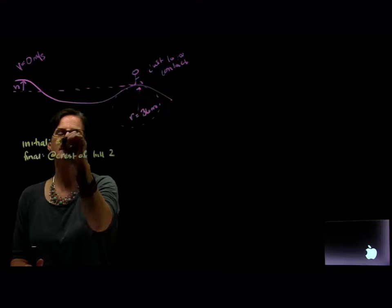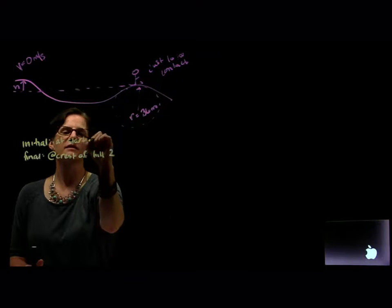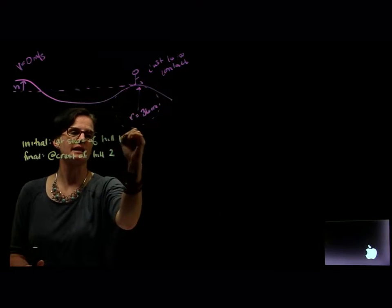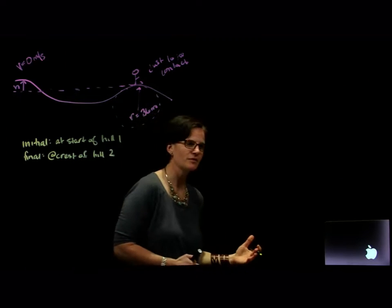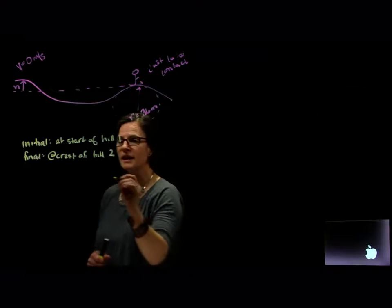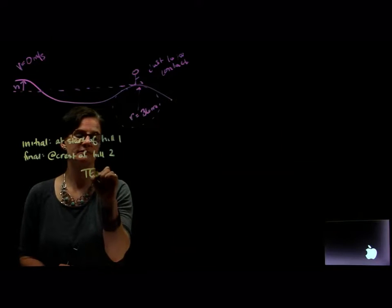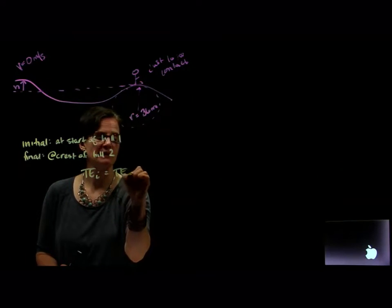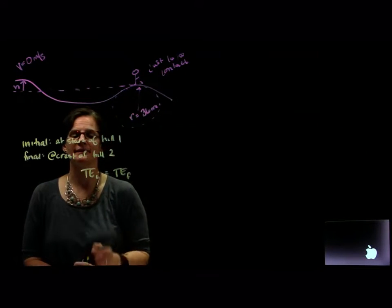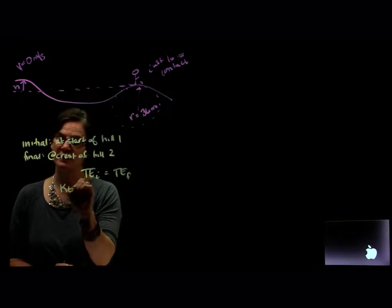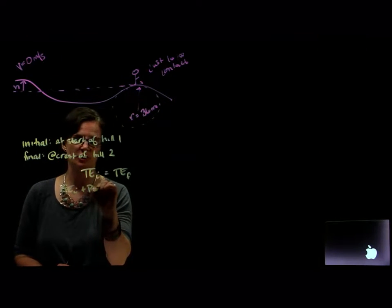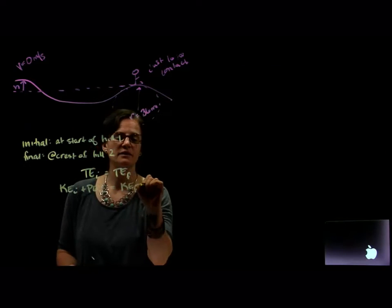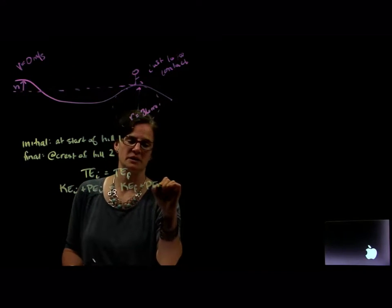We're interested in him starting at the top of hill one. So our total energy initial has to equal our total final energy. Our initial energy is going to be our initial kinetic plus our initial potential, and that has to equal our final kinetic plus our final potential.